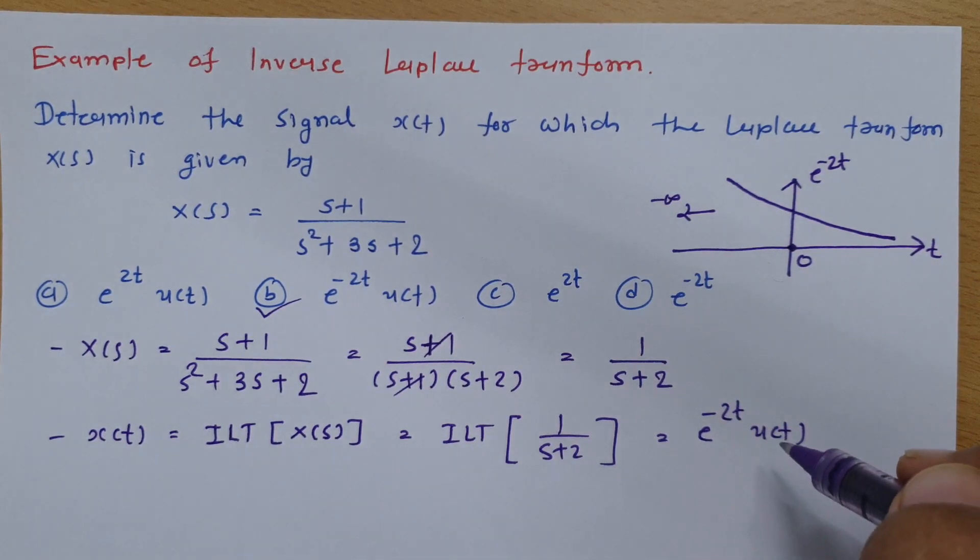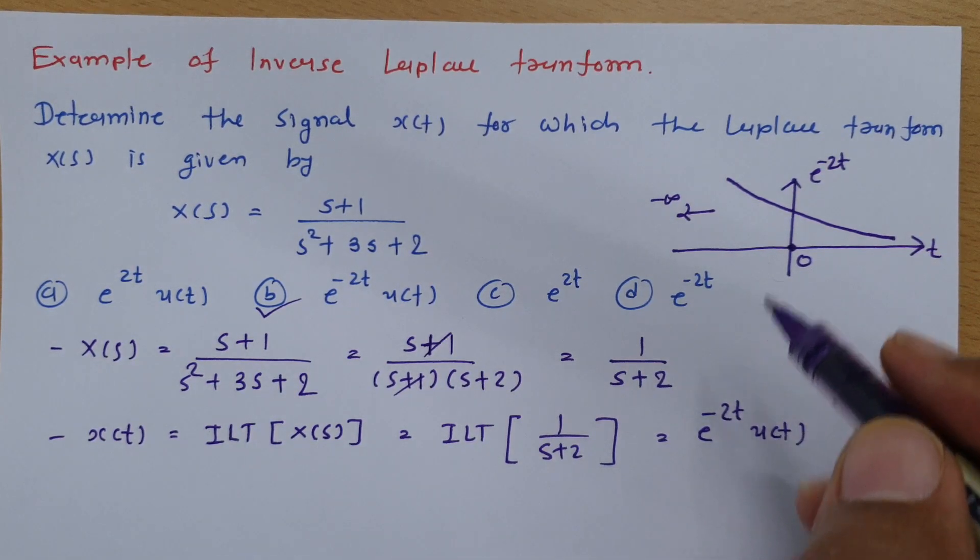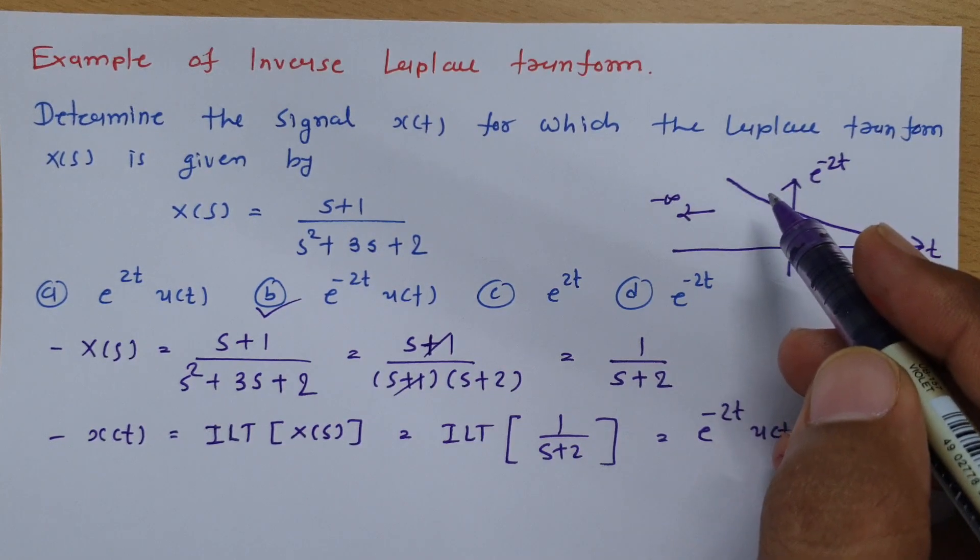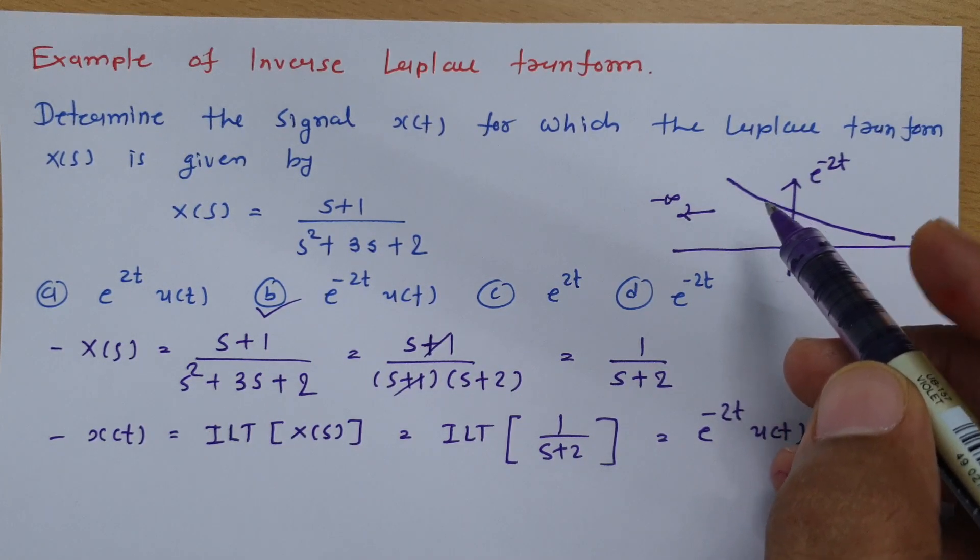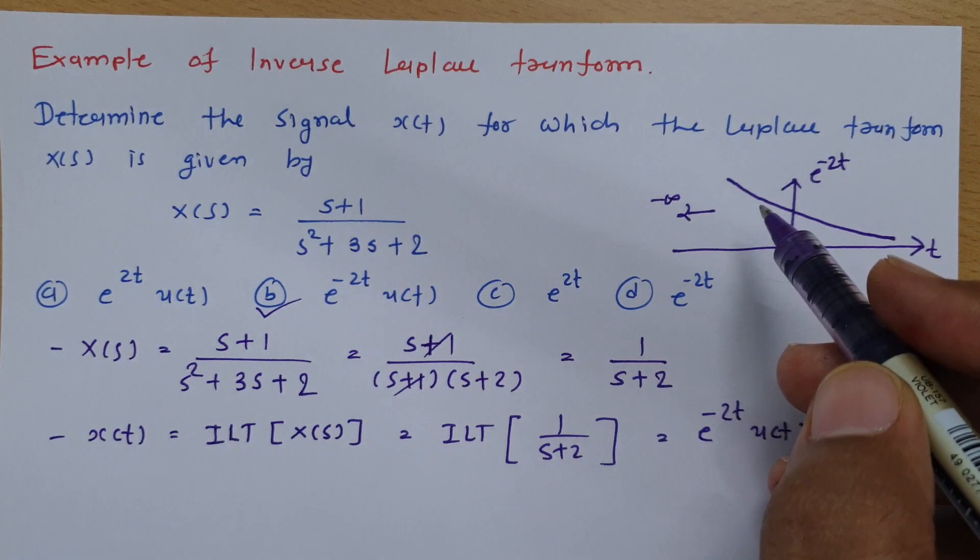One thing is u(t) should get multiplied, and that is because of Dirichlet's condition. So I have already explained existence of Laplace transform initially.